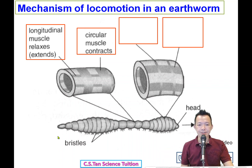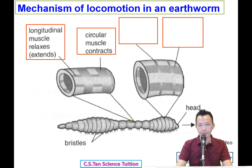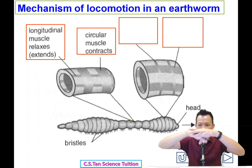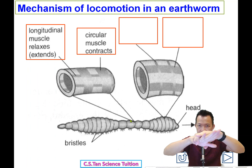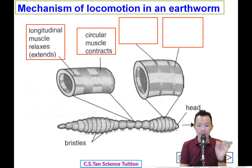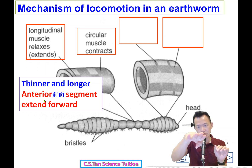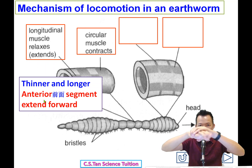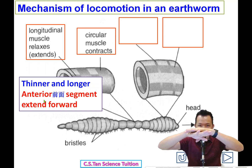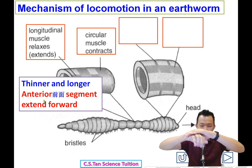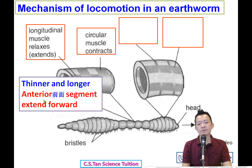When these two layers of muscle — one contracting and one relaxing — the body becomes thinner and extends longer. The anterior segments extend forward. The body becomes longer and thinner. That is the first stage of the movement cycle.